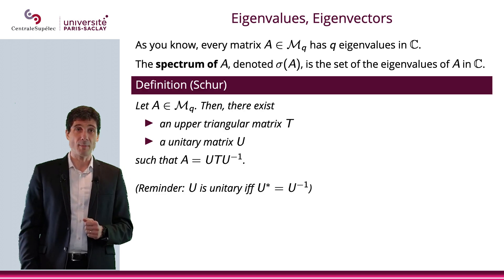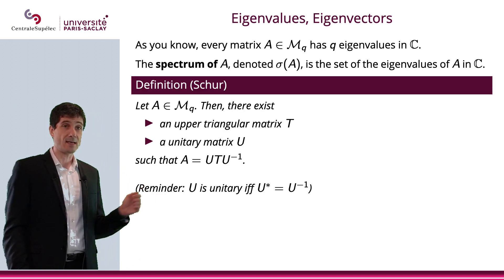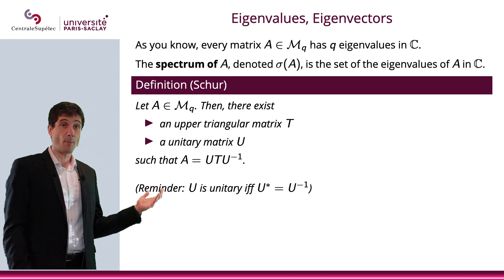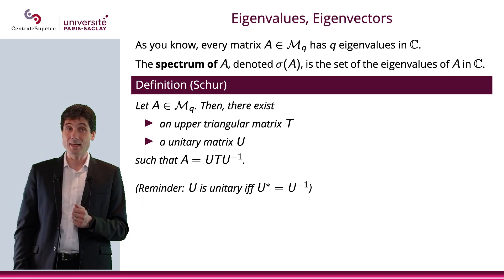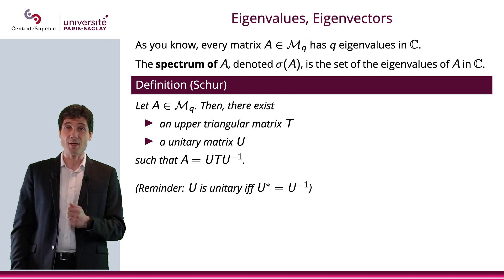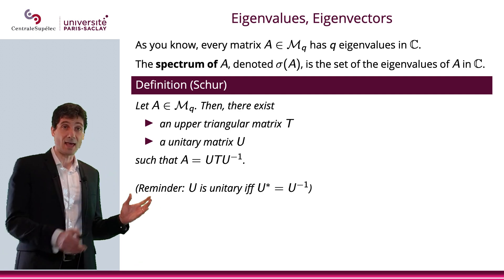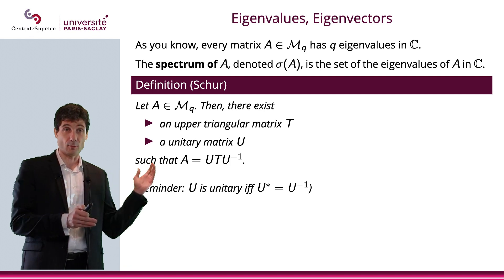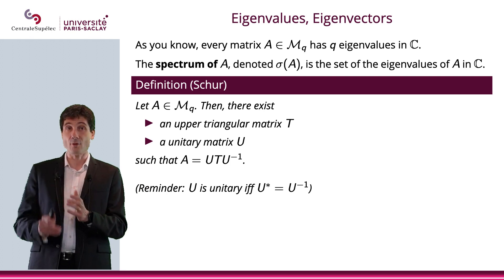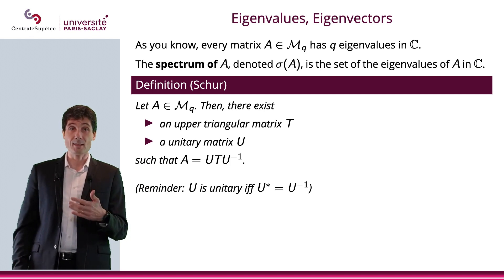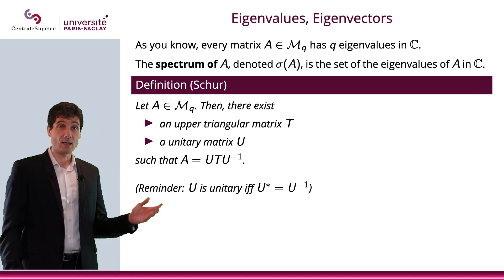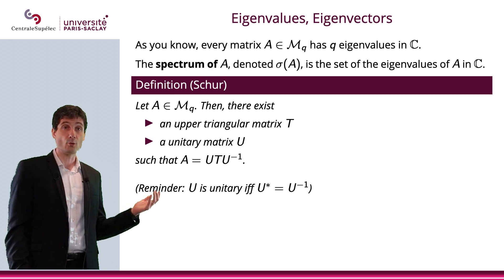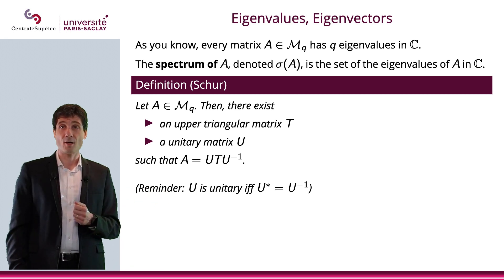I also want to remind you that if A is a q by q matrix, then there exists an upper triangular matrix T and a unitary matrix U such that A can be written as U times T times the inverse of U. And since U is unitary, it means that U*, the conjugate transpose of U, will be U⁻¹, the inverse of U.